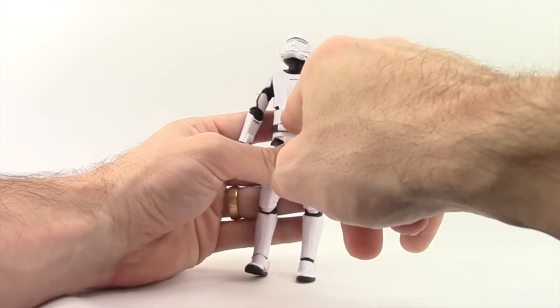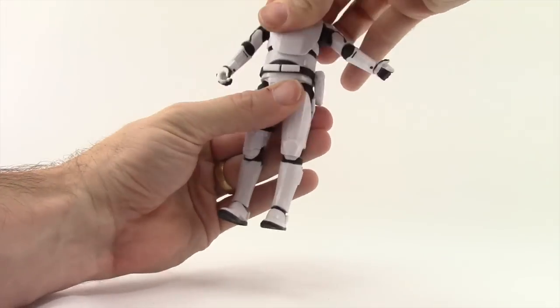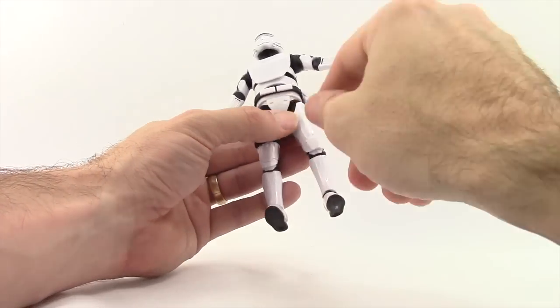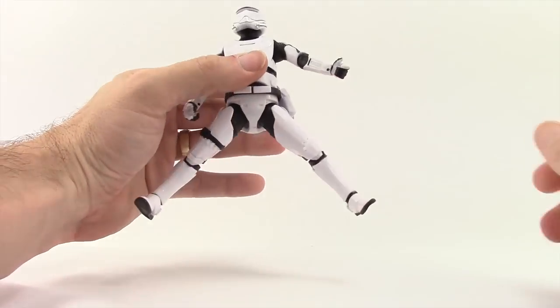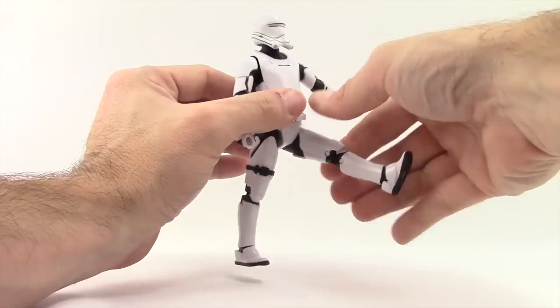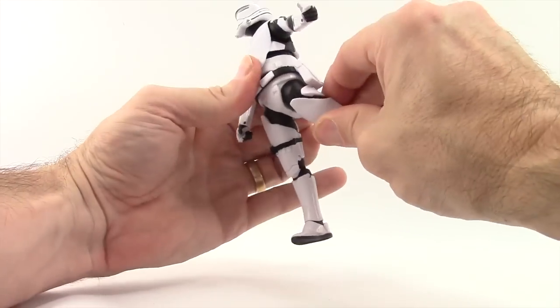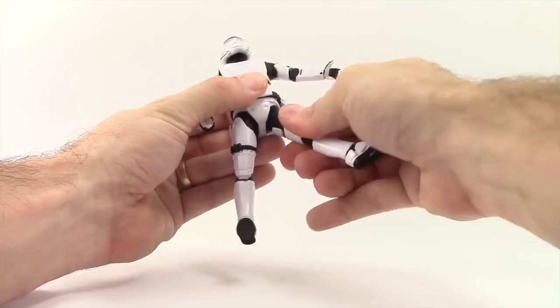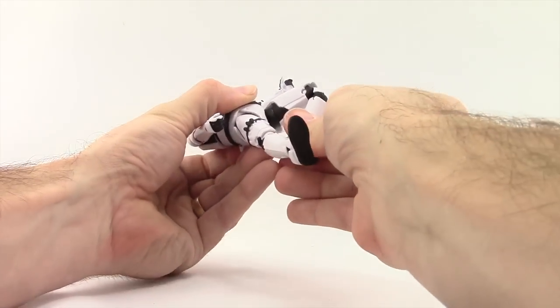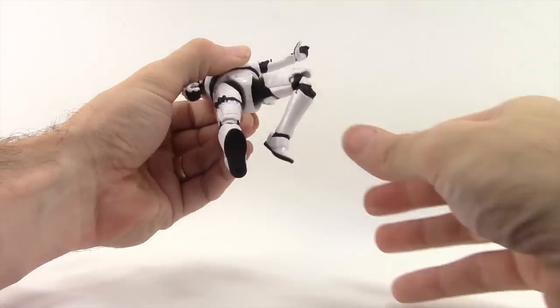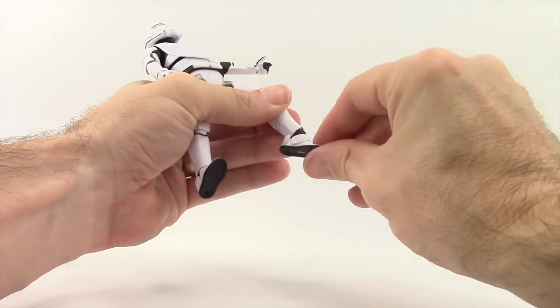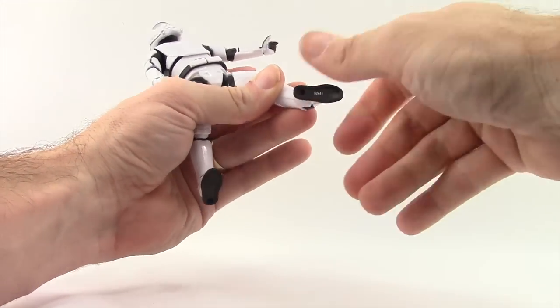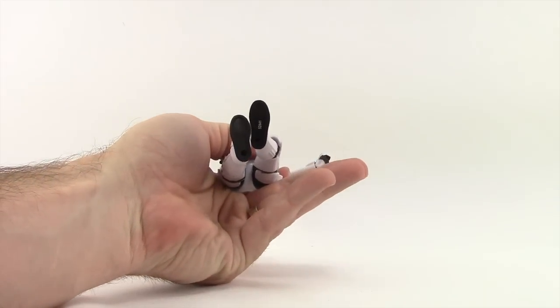There's a midsection rotation joint, but no ab crunch due to the armor. Legs are attached with ball joints for splits and forward/back movement. He's got thigh swivels and double-jointed knees for good bending. The feet have hinges for up and down movement, ankle pivots, and two peg holes on the bottom.